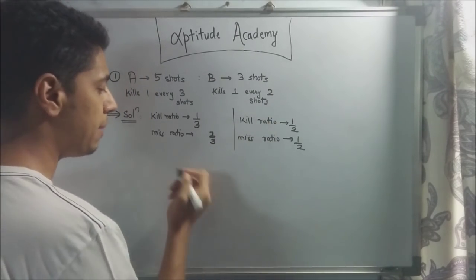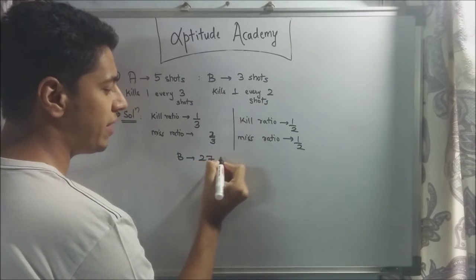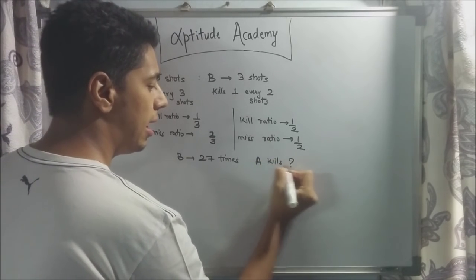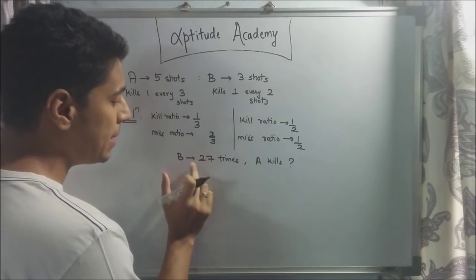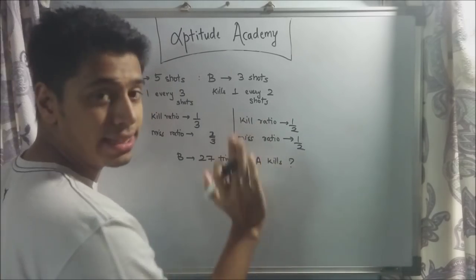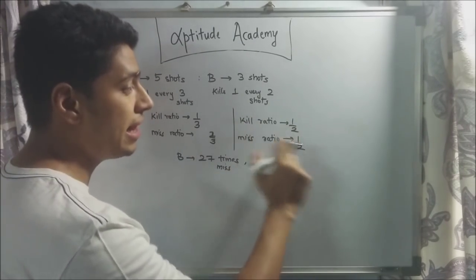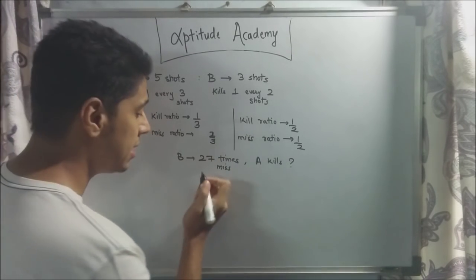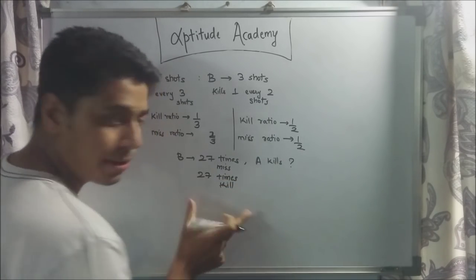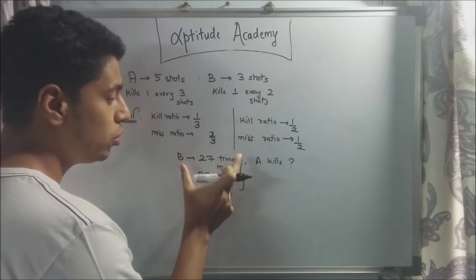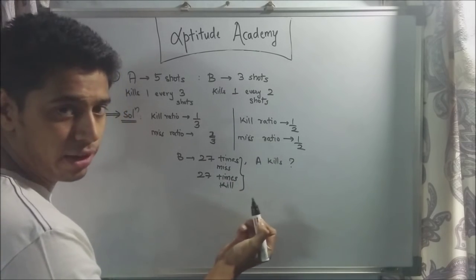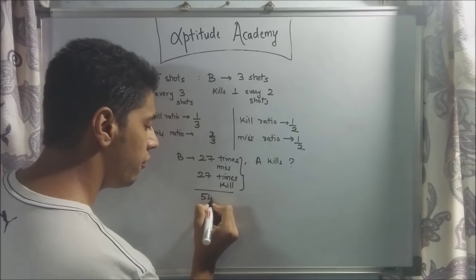They also say that B misses 27 times. Now, we know that for B, the kill ratio and the miss ratio are the same. So as many times as he misses, he will kill the same number of times. If he's missed 27 times, he will have also killed 27 times. So the total number of shots will be misses plus kills: 27 plus 27, altogether 54 shots.